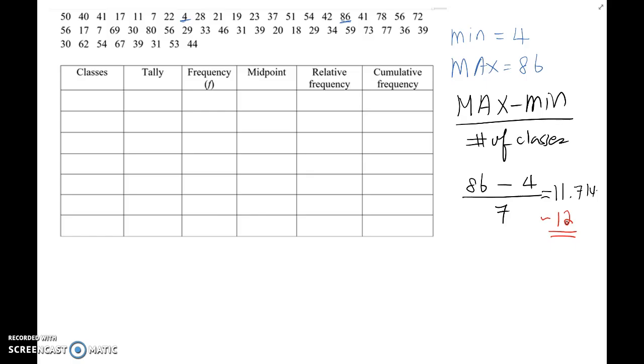Now, the second step. You start from minimum value on first class here, which is 4. Now, determining next class lower boundary value, you add this value, 12.